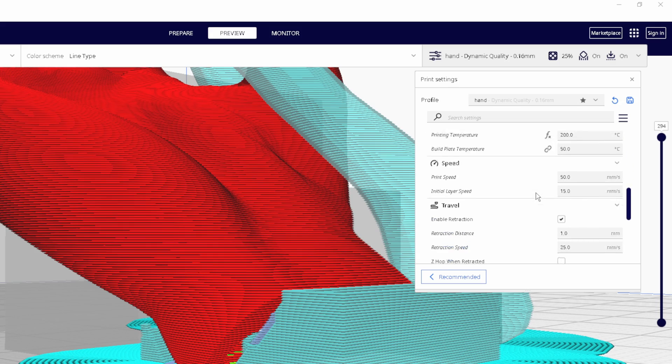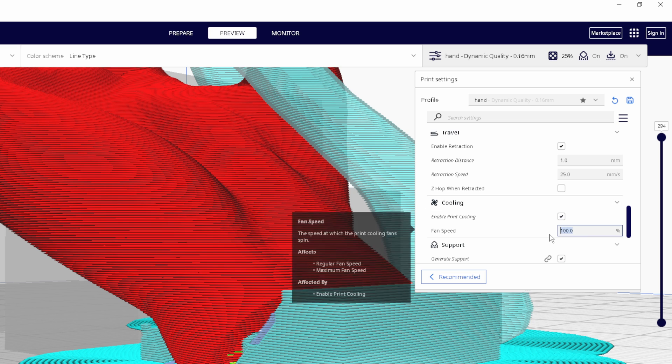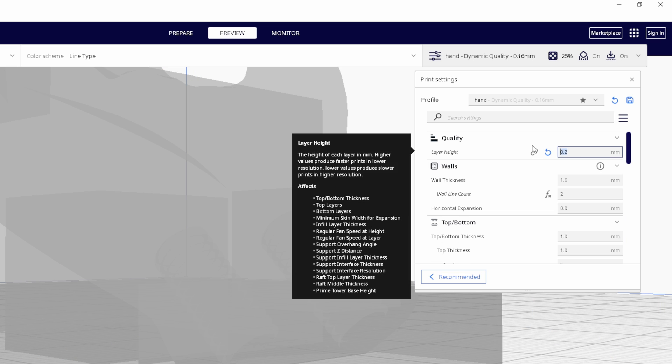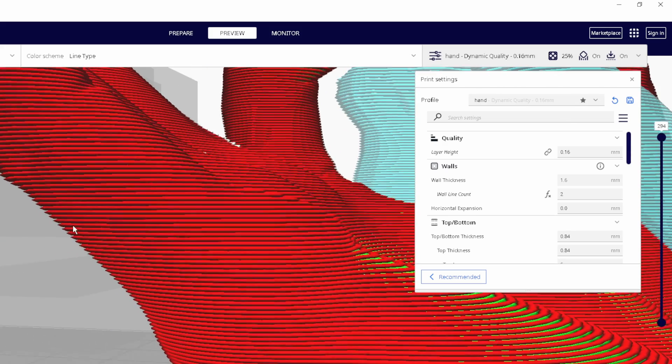As we are printing with overhangs, I recommend having your cooling fan at 100% to ensure each layer cools quickly enough to support the next. Also use a small layer height such as 0.16 instead of 0.2, as this means your overhangs will be less aggressive and you could push your angles a little bit further.